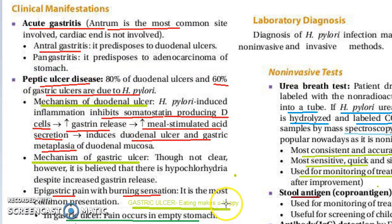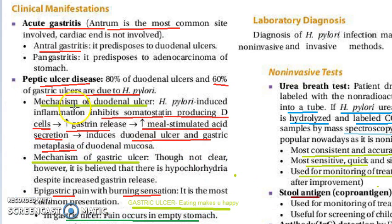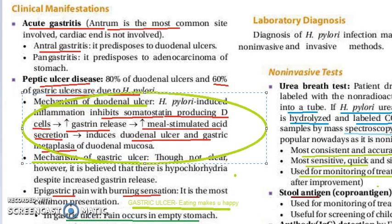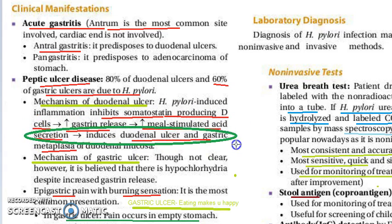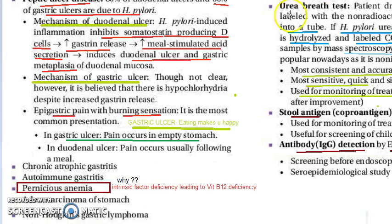A brief overview of peptic ulcer disease is given here. For duodenal ulcer, H. pylori inhibits somatostatin; as somatostatin is inhibited, gastrin levels increase, and with more gastrin, you will have more gastric acid, leading to duodenal ulcer. The mechanism of gastric ulcer is not clearly understood.